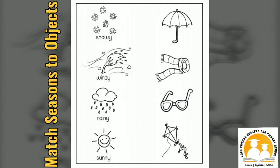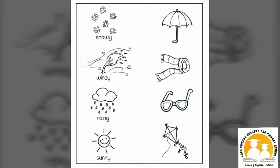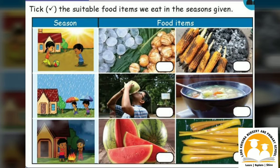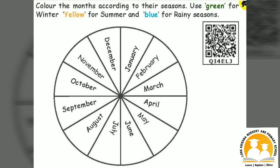Now, match the characteristics of the season to the objects on the right. Select the suitable food items we eat in the seasons given. Also, colour the months according to their seasons. Use green for winter, yellow for summer and blue for rainy season.